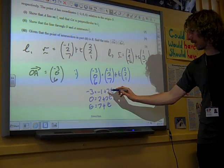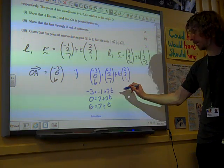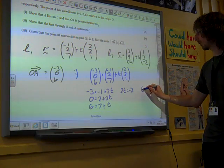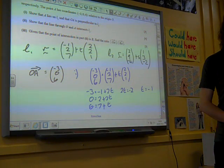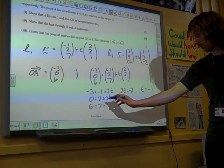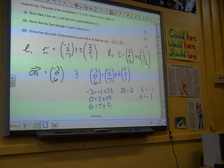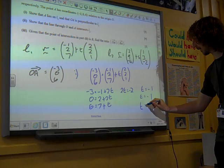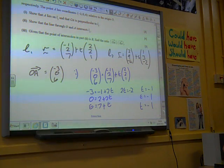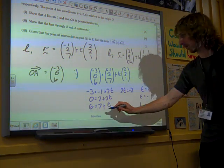It's a fairly trivial thing to do, just to solve these three equations. That one would be 2T equals minus 2, so T is negative 1. That one would be T equals negative 1 as well, and the last one, we've definitely got T equals negative 1. And so, A is on L1.